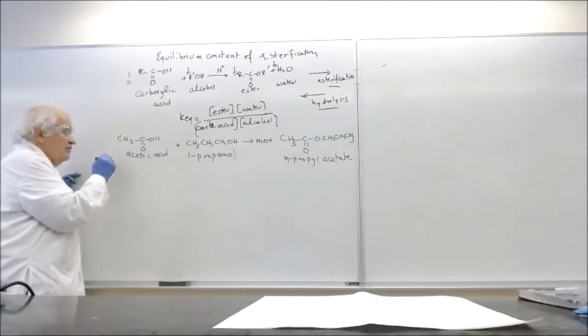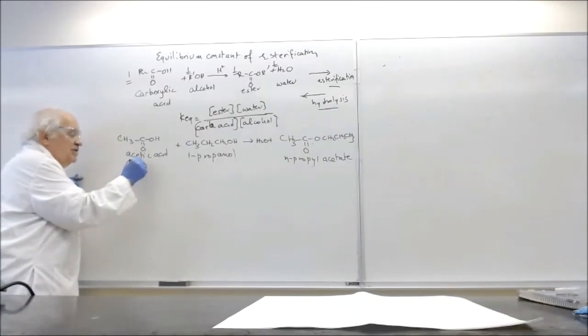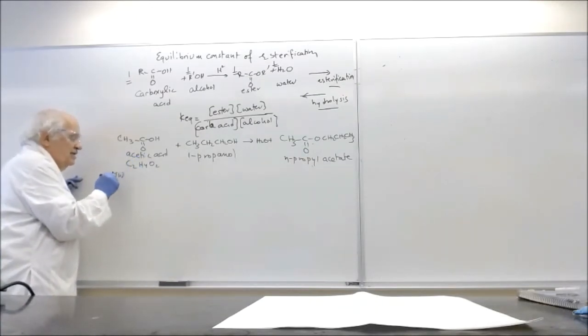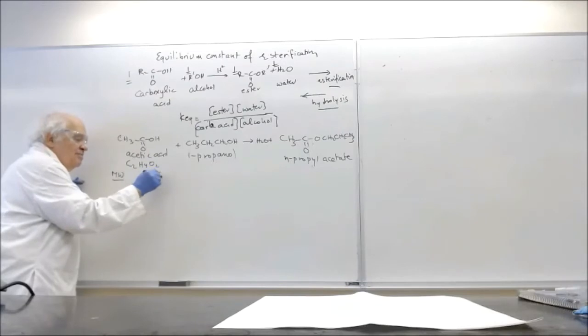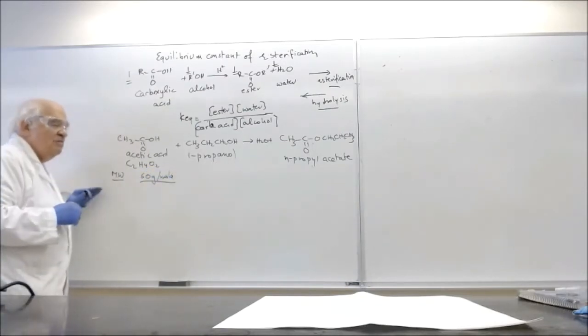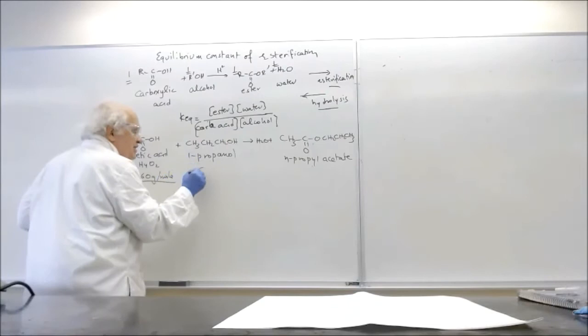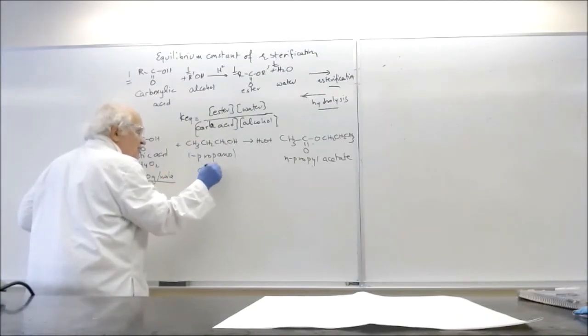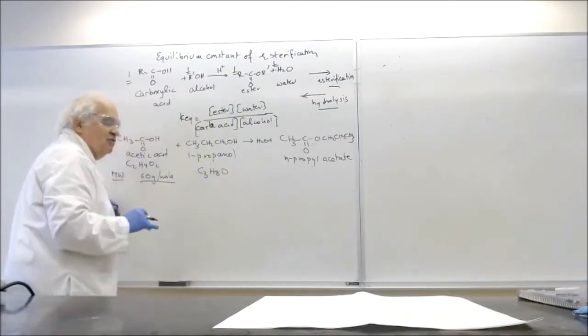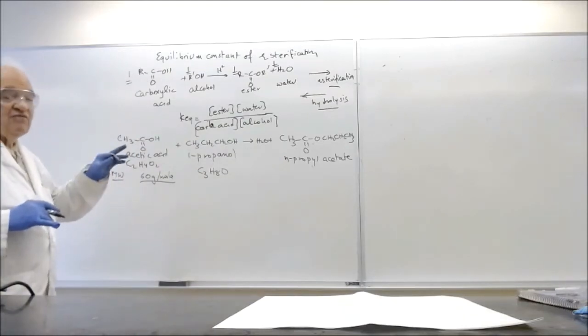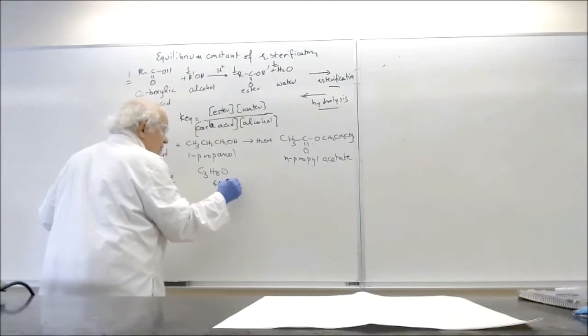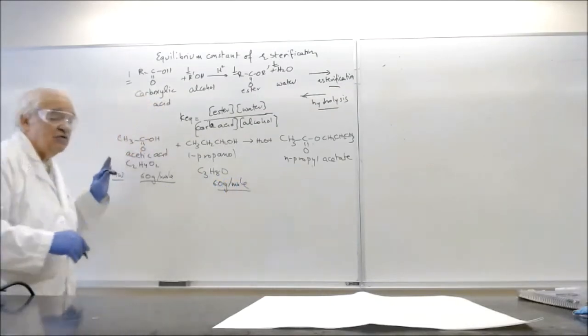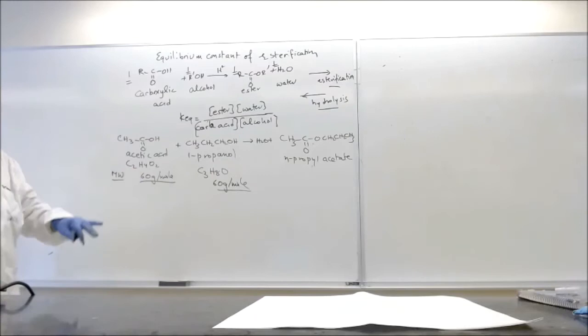The molecular weight of this compound, the molecular formula C2H4O2. So the molecular weight is 24 plus 4 is 28 and 32 is 60 grams per mole. And one propanol is C3H8O. So it is 3 times 12 is 36 plus 8 is 44 and 16 is 60.